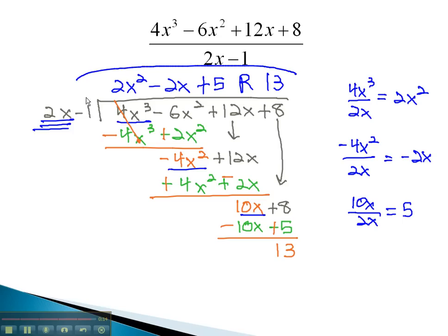Our final answer from dividing is 2x squared minus 2x plus 5 with a remainder of 13, using our long division method.